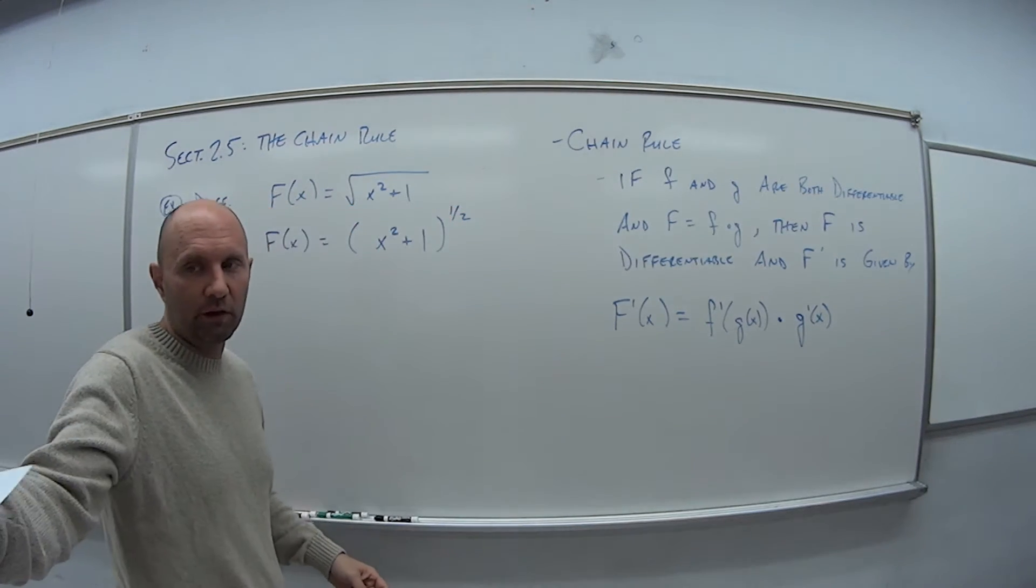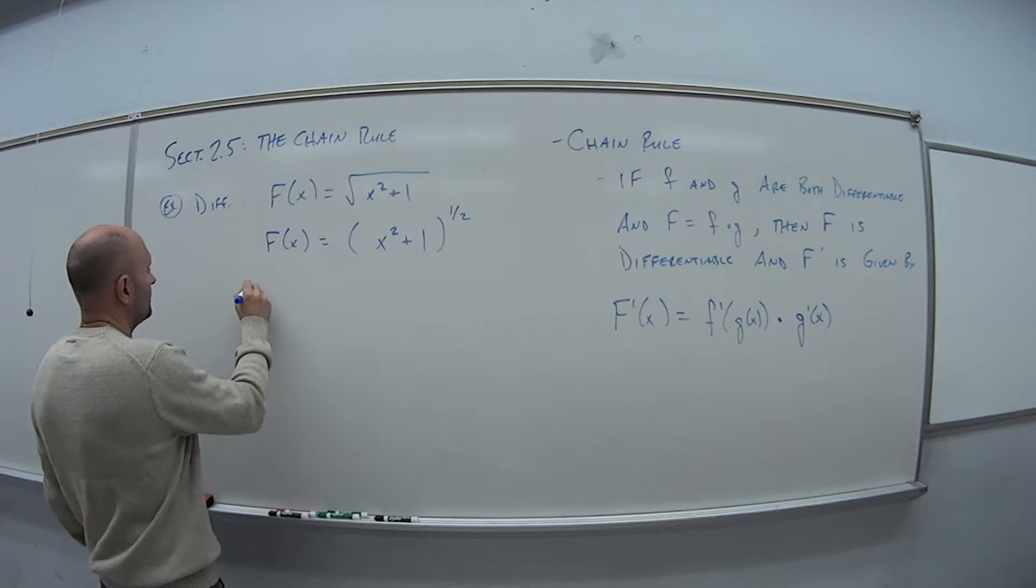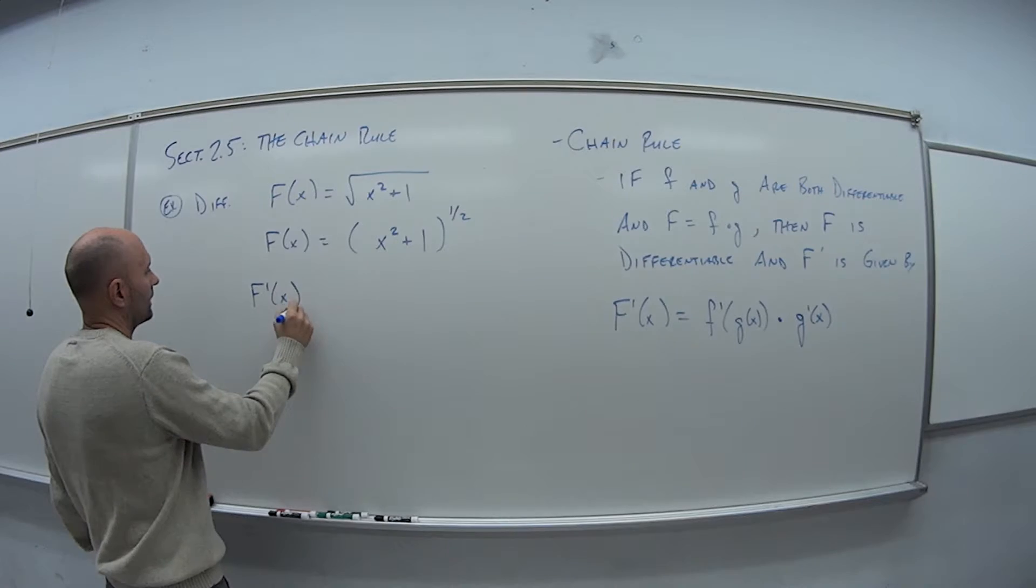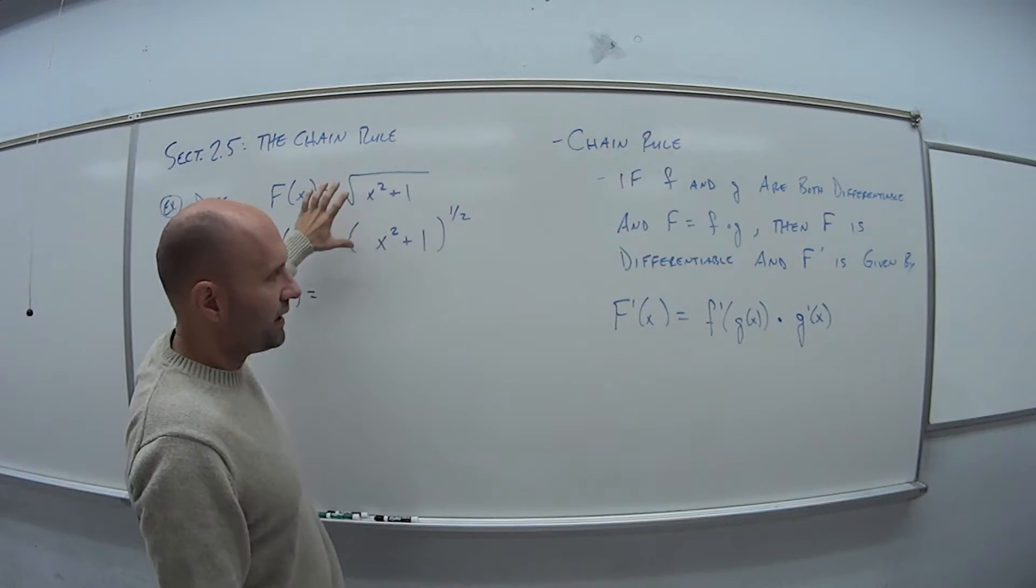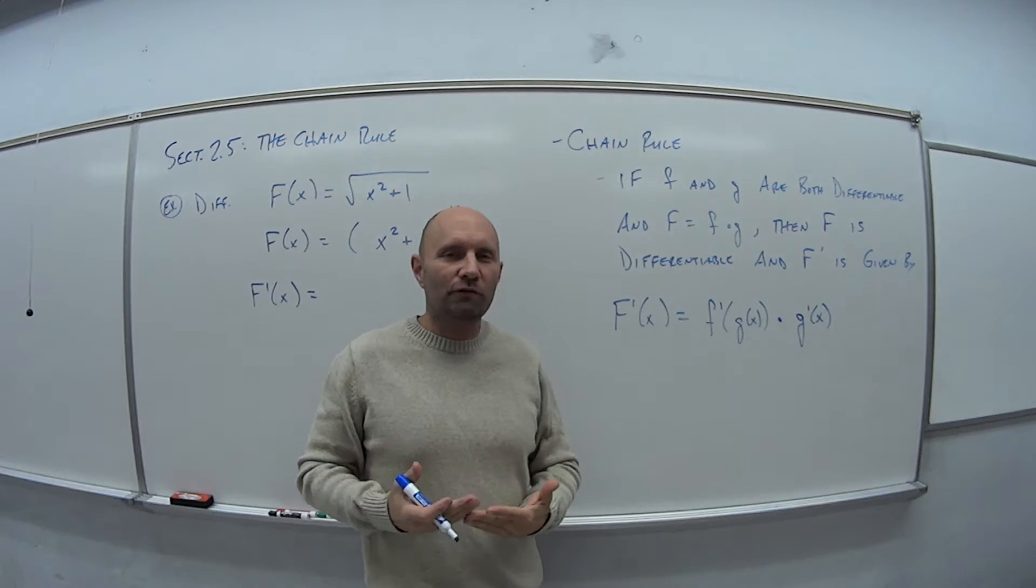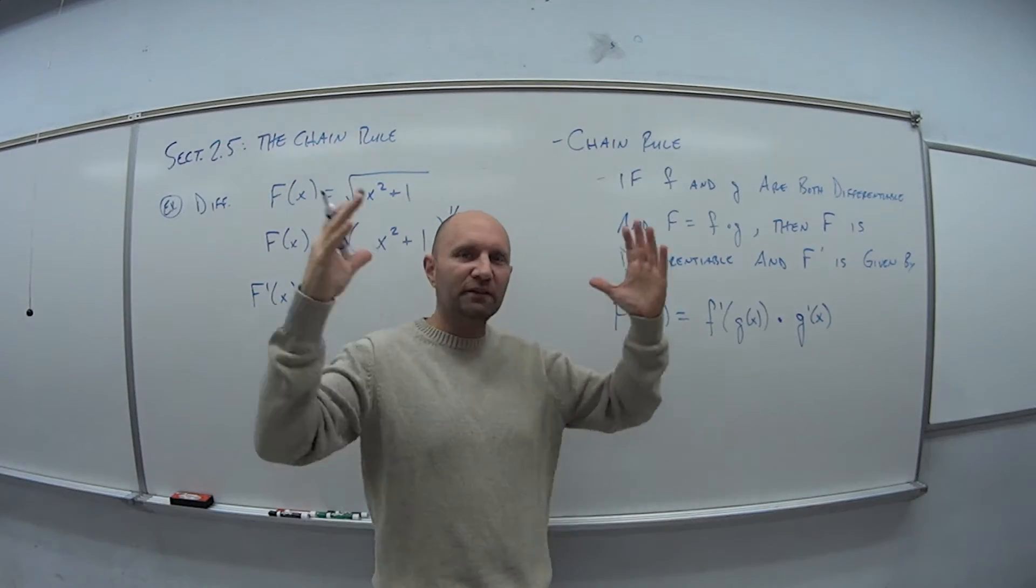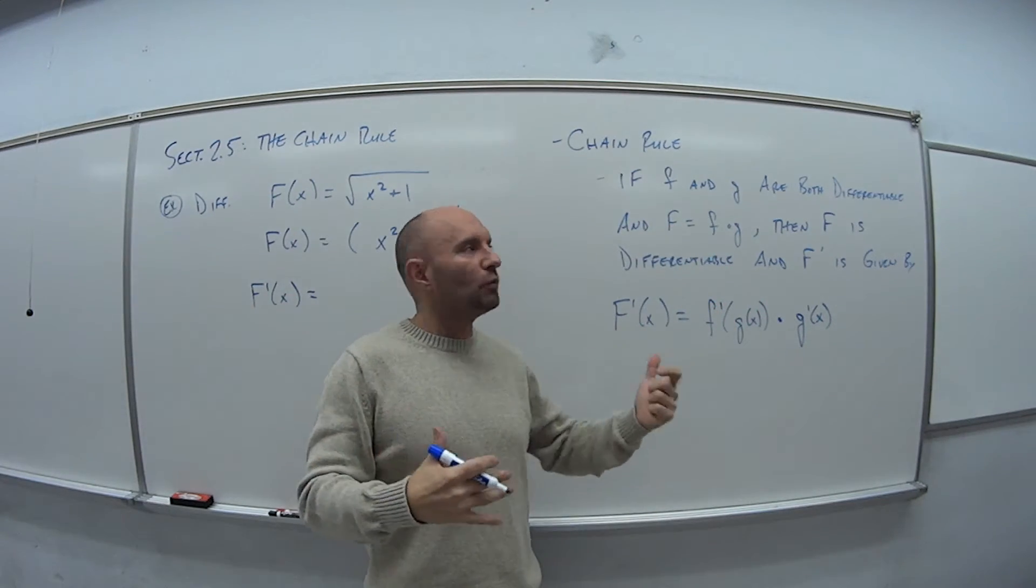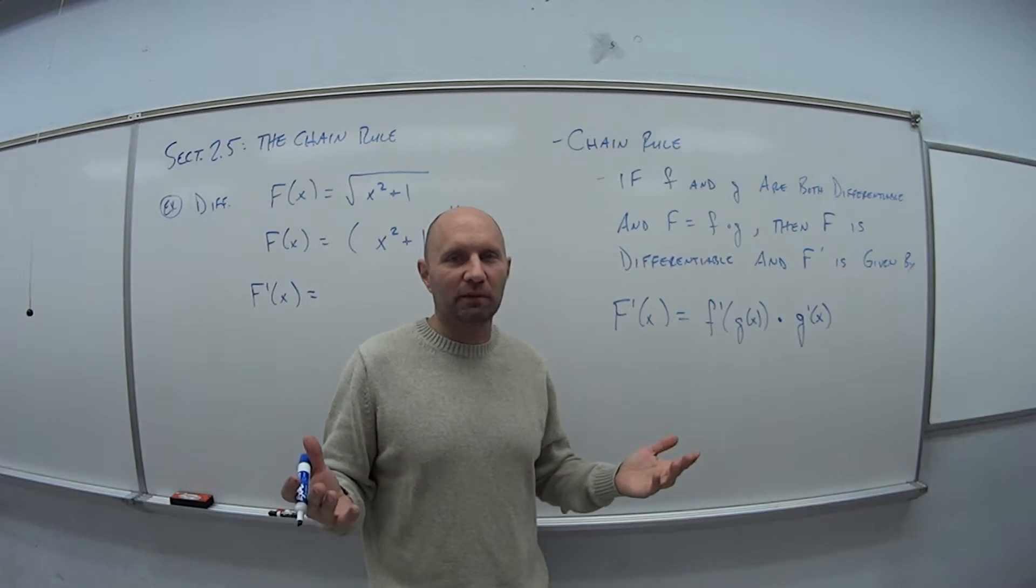So I'll change up the colors here to try to help you guys keep it straight. So f prime of x is - so we first take the derivative of - so up until this point, order of operations or decomposing the functions have always been what? Work from the inside out. Now when we're using the chain rule, I know it's completely flipping this upside down on you guys, but we're going to work from the outside and then work our way in.